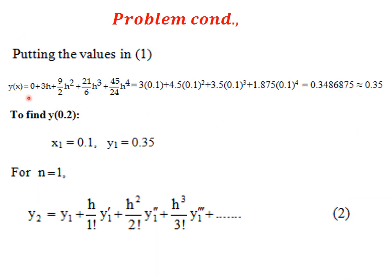Substituting into the y1 formula with y₀ = 0, h = 0.1, and derivative values 3, 9, 21, 45: y1 = 0 + (0.1/1)(3) + (0.01/2)(9) + (0.001/6)(21) + (0.0001/24)(45), which simplifies to y1 = 0.3500 approximately. For finding y2, we use x1 and y1 in place of x₀ and y₀.